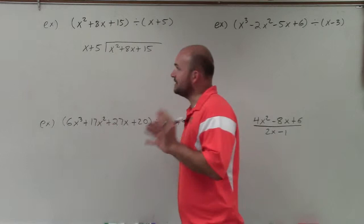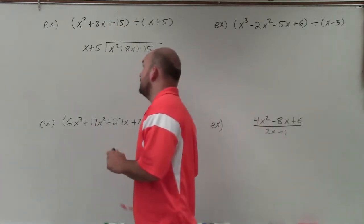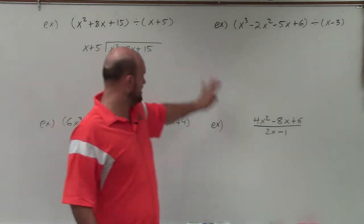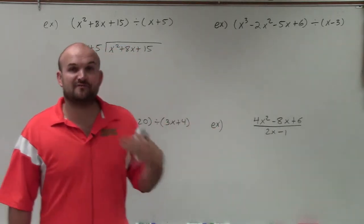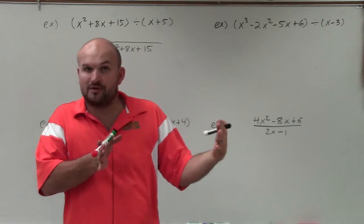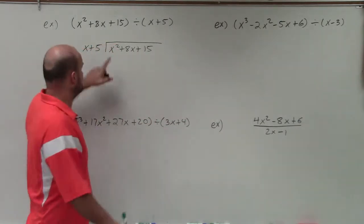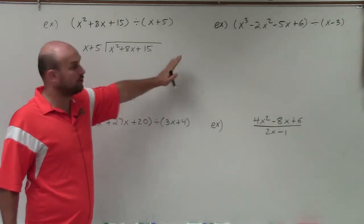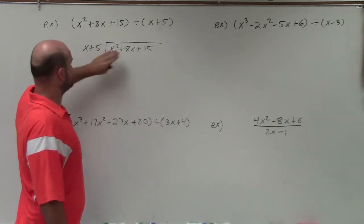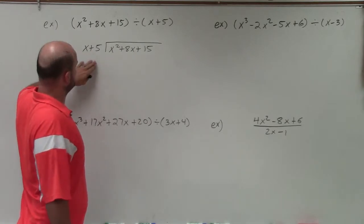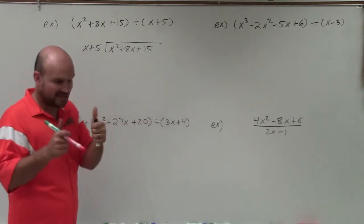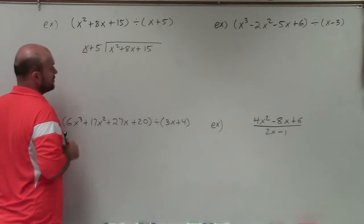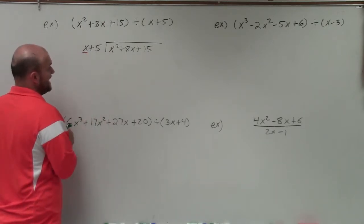When we're dividing, we want to make sure first of all that everything is in descending order — meaning you have the largest degree first and go down in descending power order. You want to make sure your divisor as well as your dividend are in descending order, or standard form, which both of these are. We're always going to be dividing by the leading term of our divisor, which is going to be x.